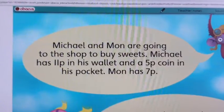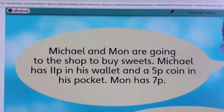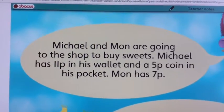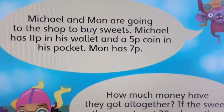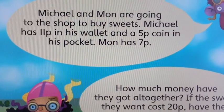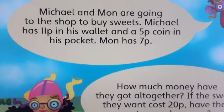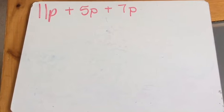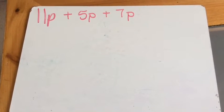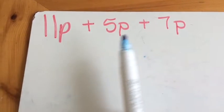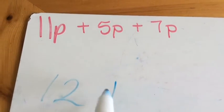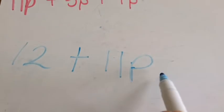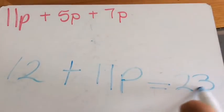Here's another one to have a think about. Michael and Mon are going to the shop to buy sweets. Michael has 11p in his wallet and a 5p coin in his pocket. Mon has 7p. How much money have they got altogether? Write down the addition sum on your square paper that you need to do. Show me some known number facts that you need to use to help you work out the answer. You should know your number bonds to 12 — 7 and 5 makes 12. But then you've got the 11p to add on. Think about how you do that. So the answer was 23p. Don't forget the P sign — so important.